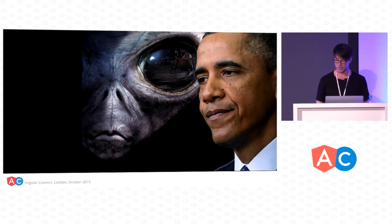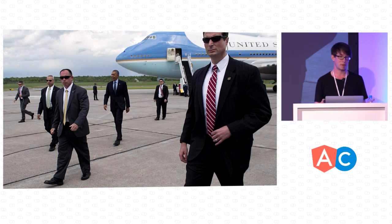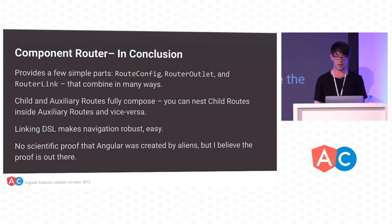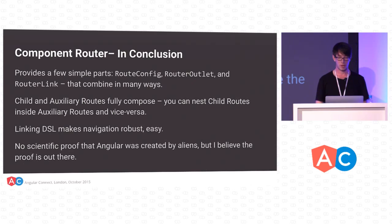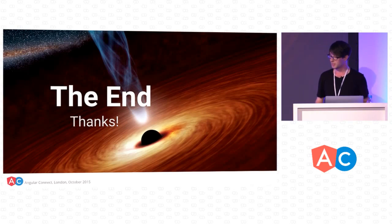I did a bunch of research and went through all the documents, and I found a startling conspiracy that goes all the way to the top. I was getting on the plane and was approached by some FBI agents and they confiscated all of my proof. So I don't have any hard scientific evidence. But I can say for certain that the component router provides a couple of simple things you combine together in interesting ways. It provides child and auxiliary routes to handle innumerable different situations in your application. This linking DSL really helps keep dead links from occurring in your app — it does a lot of checking for you, meaning you can safely refactor navigation with confidence. So that's all I have. Thank you everyone.